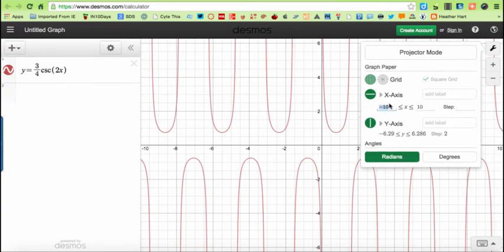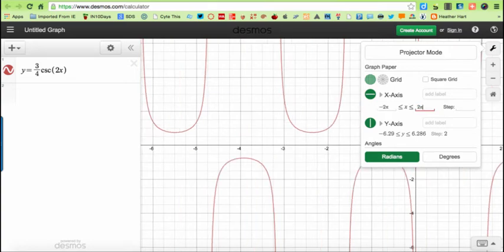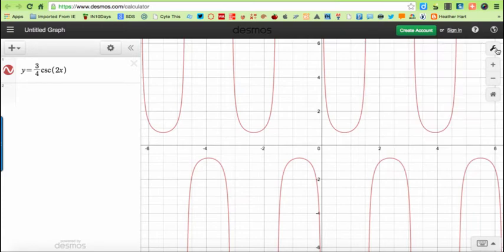And since we usually go from negative 2π to 2π, I'm going to say negative 2 and then type in pi, and it changes it to pi. Then I'll go over here and type that into 2π, and that changes that nice and pretty. So your graph goes from negative 6.28 to positive 6.28.